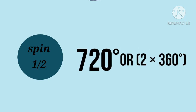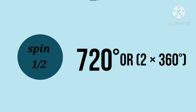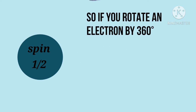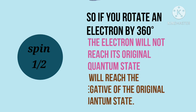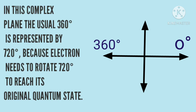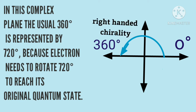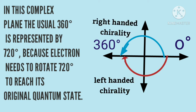To understand chirality, let's take the case of an electron, which is a spin-half particle. That means it needs to rotate 720 degrees — two full 360-degree rotations — to come back to its original quantum state. So if you rotate the electron 360 degrees, it will not return to its original quantum state; it becomes the negative of the original quantum state. All of this can be visualized on a complex plane. The path the electron chooses to reach the quantum state defines its chirality: if it goes one way it's right-handed chiral, if it goes the other it's left-handed chiral. This has to do with the phase of the wave function of the electron.